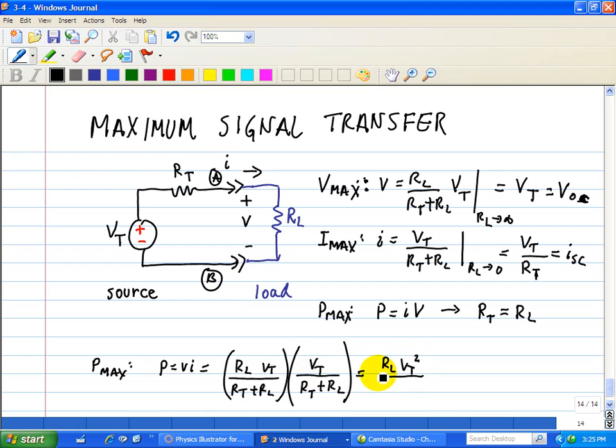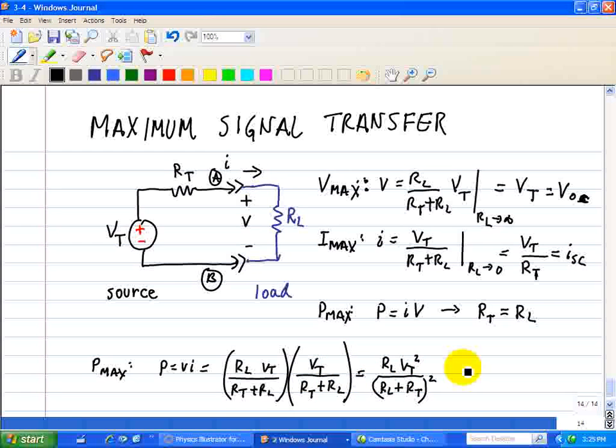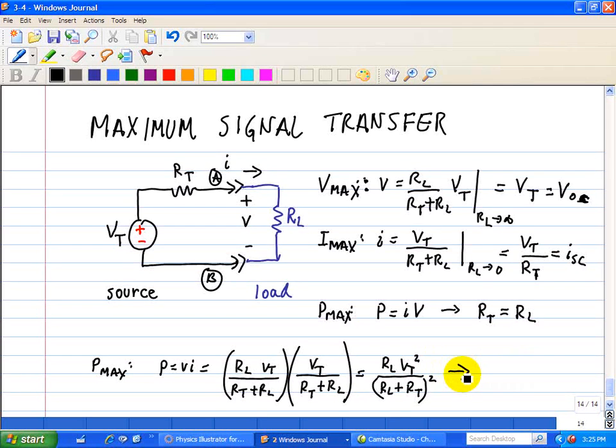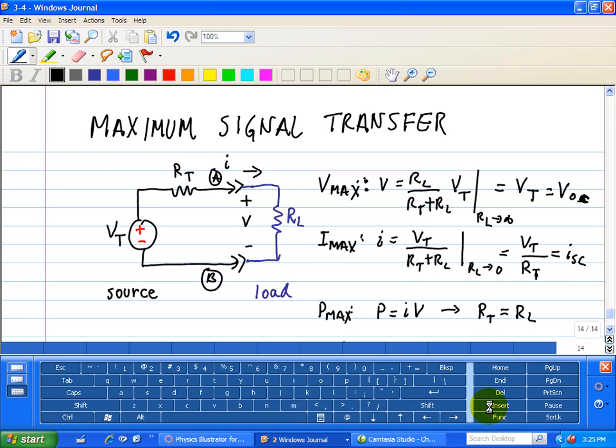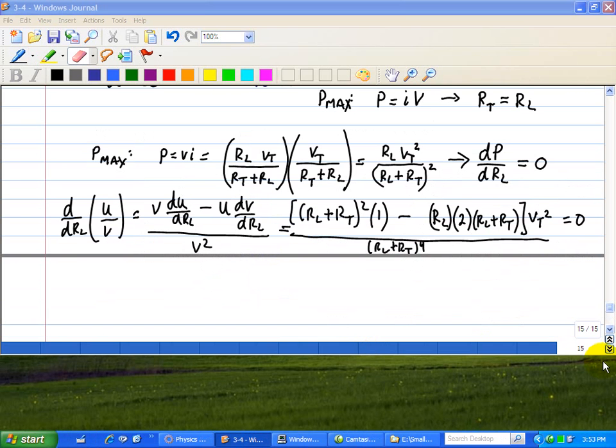And to maximize it, we take the derivative of P with respect to RL and set that equal to 0.